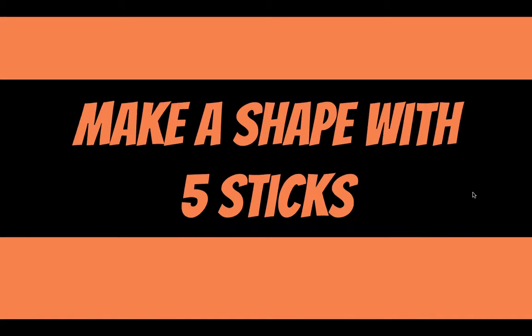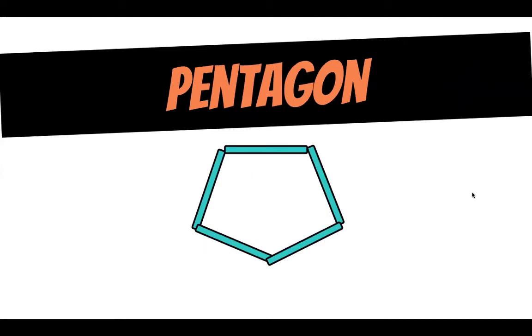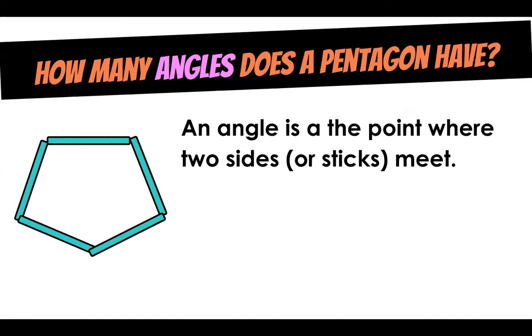Let's look at some more shapes. Now I want you to make a shape with five sticks. This one might take a little longer. You can pause the video if you need to. What did you make? I made a pentagon. Now, a pentagon can look a variety of different ways, just like all of our other shapes. But here's what's important about a pentagon. How many angles does a pentagon have? Do you remember what an angle is? It's that point where the two sides meet. Can you count up our angles on the pentagon? This pentagon has five angles. One, two, three, four, five.